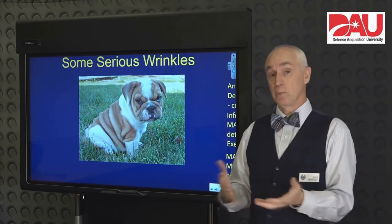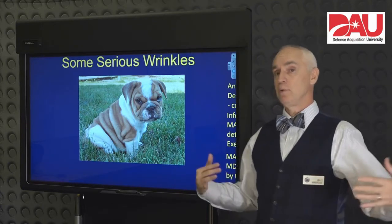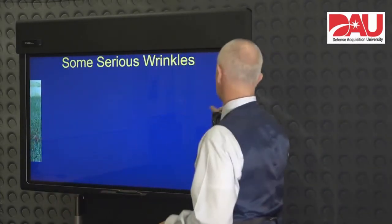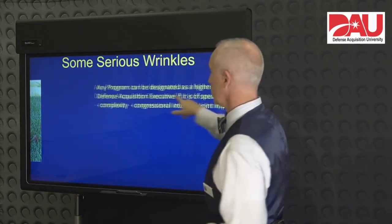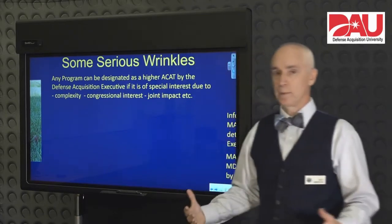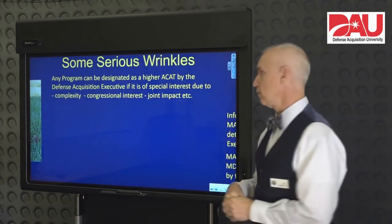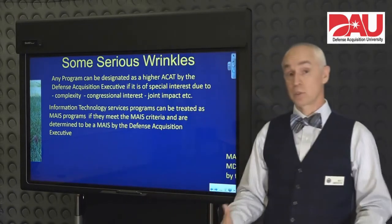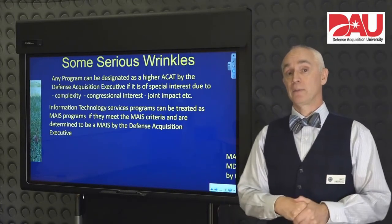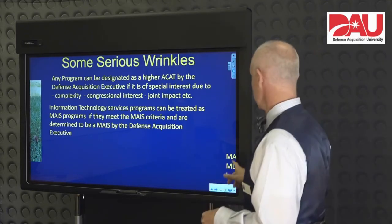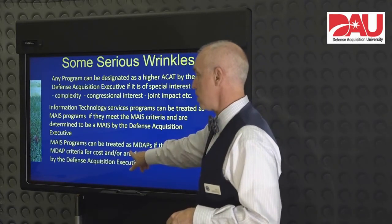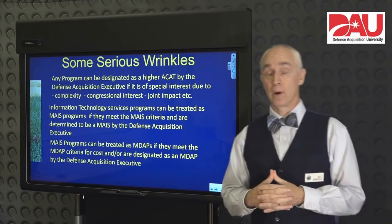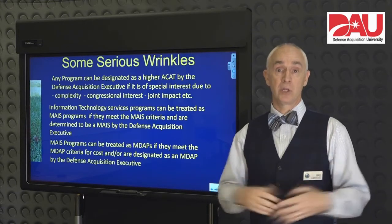There are some serious wrinkles to this. Just because you fall below these dollar figures doesn't mean you necessarily stay at a lower level like ACAT 2 or ACAT 3. The defense acquisition executive can always designate a program as a higher acquisition category based on interest at the DOD or congressional level. Or if you're spending a lot of money on an information technology services program, they may decide it's important enough to be treated as a major defense acquisition program. Lastly, any ACAT 1 automated information system can be designated as a major defense acquisition program if the defense acquisition executive decides it should be managed at that level.